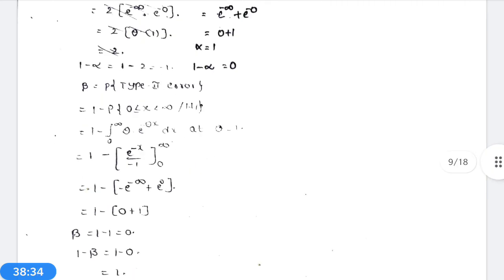The power of the test: 1 − beta = ∫ L1 dx over W. Under H1: theta = 1, L1 = 1 · e^(−x) = e^(−x). Therefore 1 − beta = ∫ from 1 to ∞ of e^(−x) dx = [−e^(−x)] from 1 to ∞ = 0 + e^(−1) = 1/e. So 1 − beta = 1/e, and beta = 1 − 1/e.